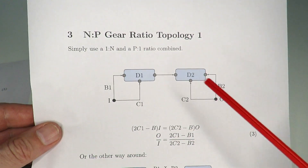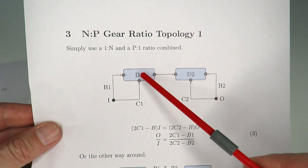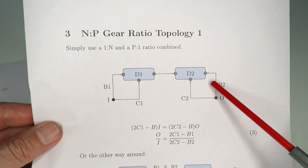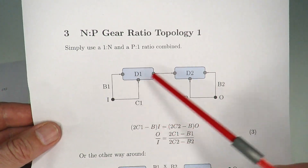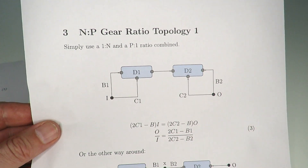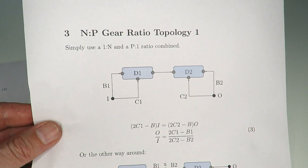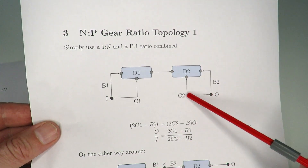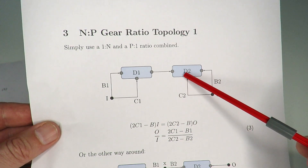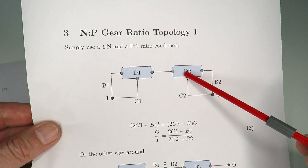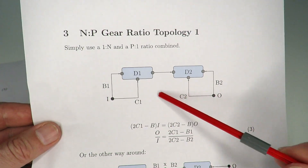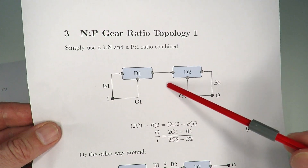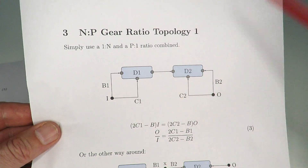I looked at a topology where differential D1 and D2 are in series using the 1-to-n and 1-to-p configurations. I thought: what would happen if instead of connecting this output back to the second differential, I connect it back to the first one, and connect the first one's input to the second one?